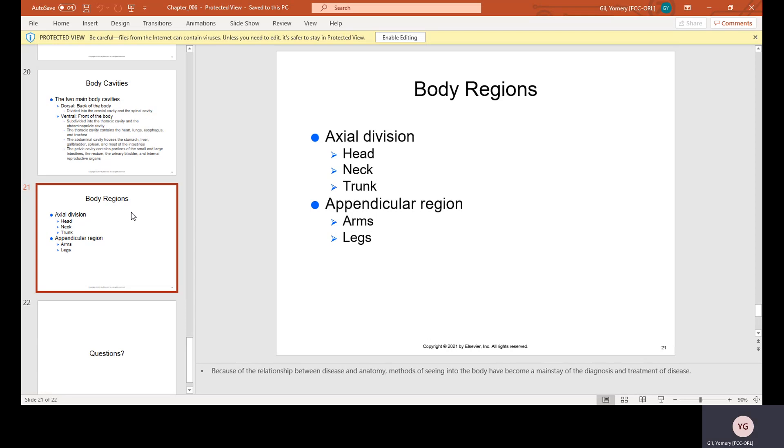Body regions. The axial division, which is head, neck, and trunk. And then appendicular region, which are the arms or the legs, and those are considered the limbs.